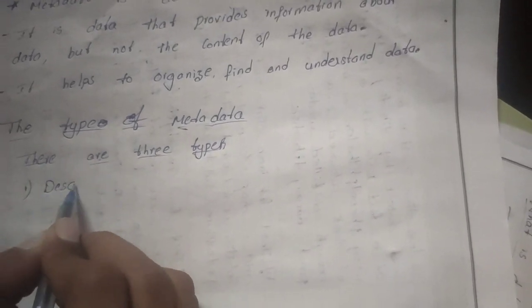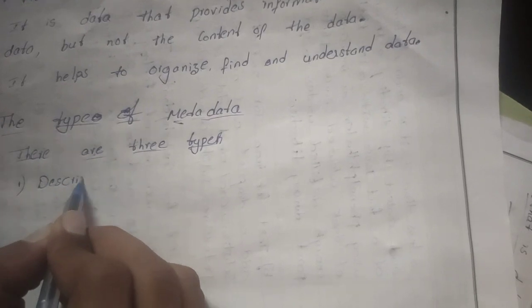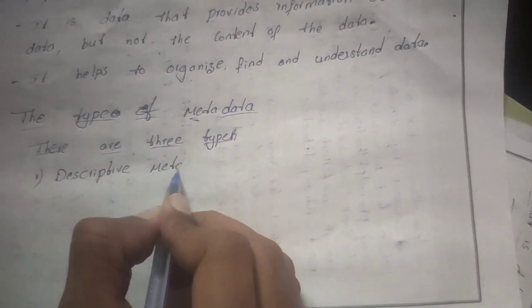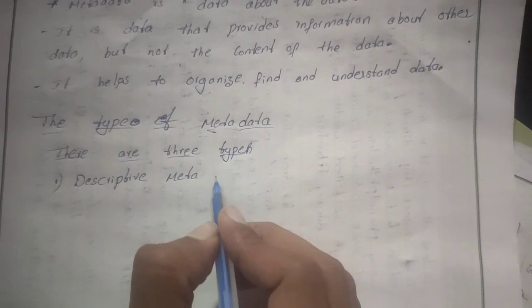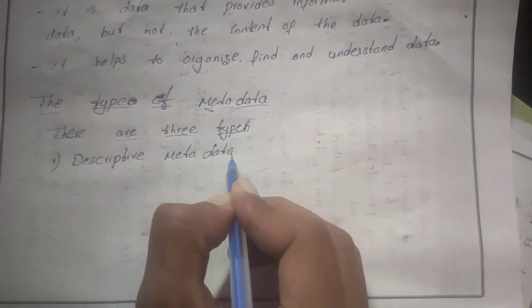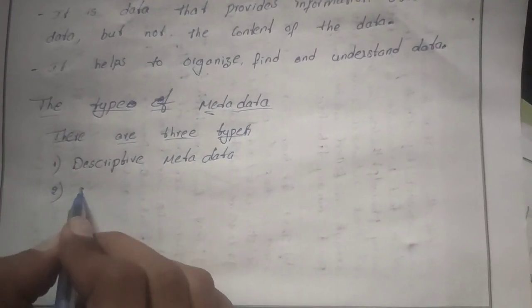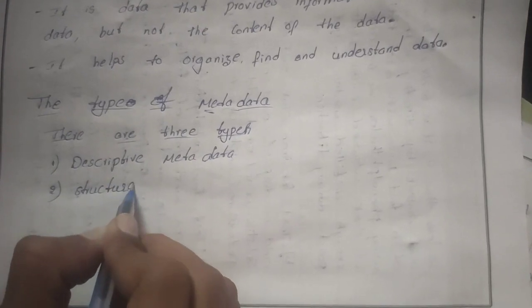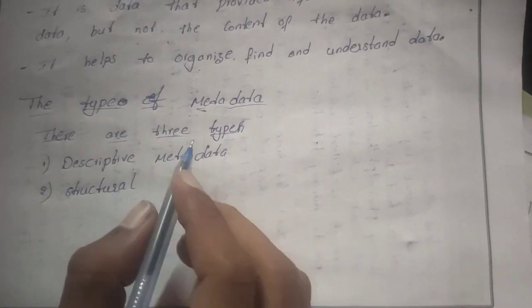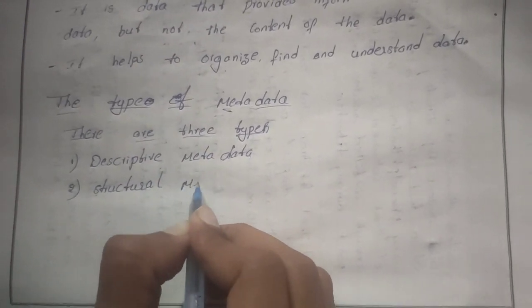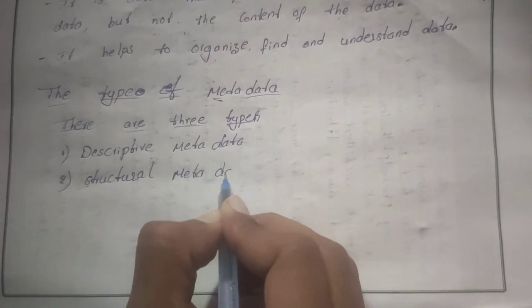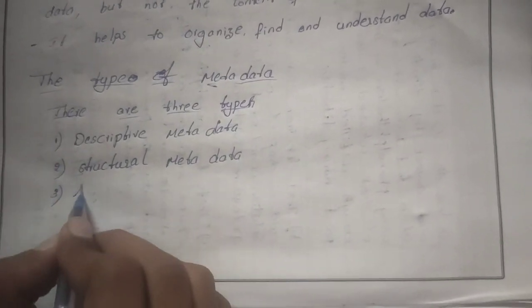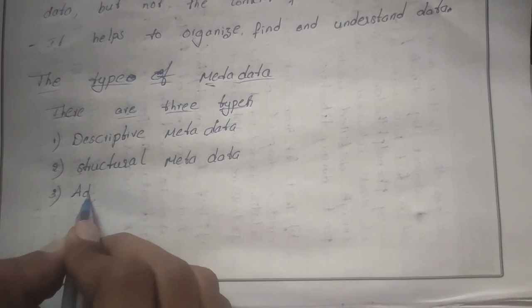The three types are: descriptive metadata, structural metadata, and administrative metadata.